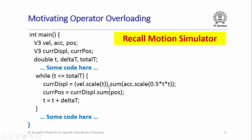Recall that we used the class V3 in its struct incarnation to write a motion simulator program. In that program's simulation loop, at every time step of granularity delta t, we calculated the current displacement and current position. The expressions say: take the initial velocity as a three-dimensional vector, scale it by t, and add to that the scaled acceleration vector with scaling factor 0.5 t squared. Similarly, add current displacement to the initial position to get the current position, all as three-dimensional vectors.